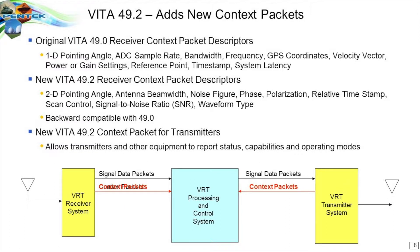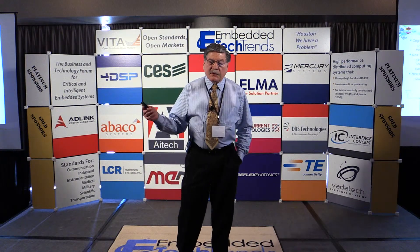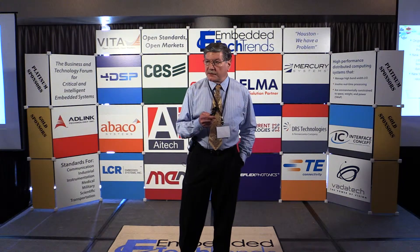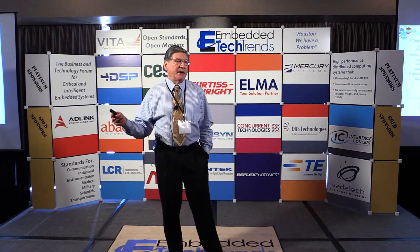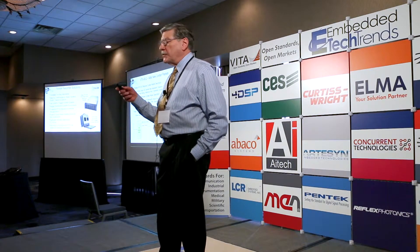In Vita 49.0, the context packet carried a lot of different things communicated along with the signal. Vita 49.2 adds even more context information about the signal and is backwards compatible to 49.0. Context packets are also being used to support data transfers from transmitters — not just coming back from receivers, but also indicating how the transmitter is behaving and what mode it is operating in. That's a new extension of what context packets really do.